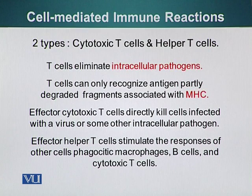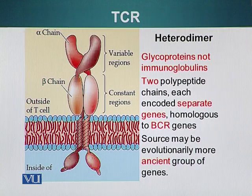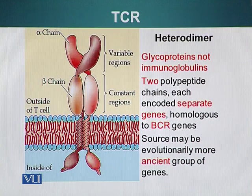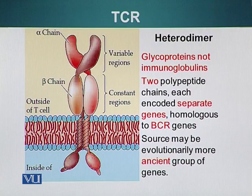Now let's look at the structure of the T cell receptor, abbreviated TCR. It's a heterodimer of alpha and beta chains; it is a glycoprotein, not an immunoglobulin. The two polypeptide chains are each encoded by separate genes, and it is homologous to the BCR, or B cell receptor. This suggests these proteins may have a common ancestor — some prototype gene which evolved into TCRs and BCRs that diverged at some point in evolution.